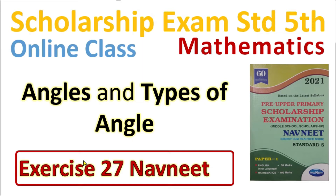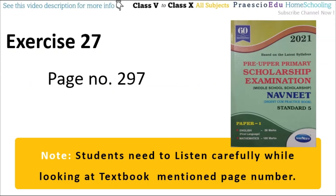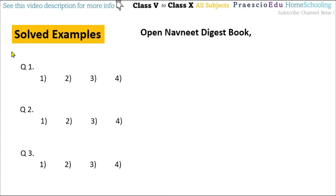In this video, we are going to see exercise 27, which is available in our Naunith digest on page number 297. Before going to see the exercise, there are some solved examples which we have also seen in our lecture video. The types of angles are: right angle, acute angle, and obtuse angle.